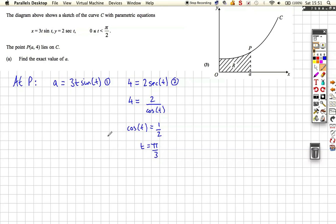Okay, so once we've got pi over 3, we can then substitute into 1. Substitute into equation number 1. So now we can say that A is equal to 3 lots of pi over 3, sine pi over 3. So what we get is, well, sine pi over 3 is root 3 over 2, and 3 lots of pi over 3 means the 3's cancel. So you're going to get pi root 3 over 2, and that's our value for A.